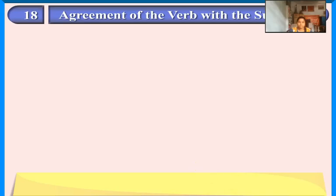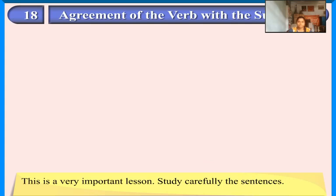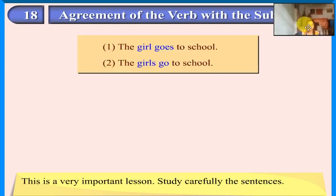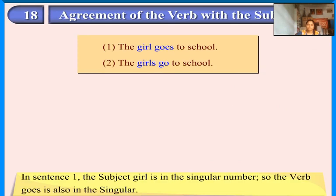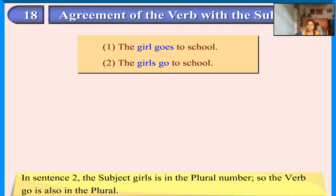Agreement of the verb with the subject. This is a very important lesson. Study carefully the sentences: 'The girl goes to school.' 'The girls go to school.' In sentence 1, the subject 'girl' is in the singular number, so the verb 'goes' is also in the singular. In sentence 2, the subject 'girls' is in the plural number, so the verb 'go' is also in the plural.